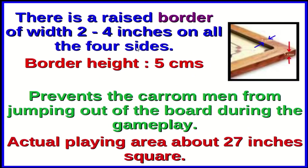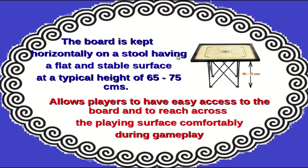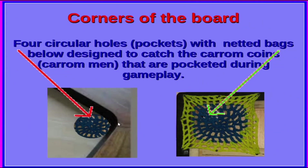On all four sides of the board there are raised borders of width 2 to 4 inches and a typical height of about 5 cm. The purpose of this border is to prevent the carom men from jumping out of the board during play. The actual playing area is therefore about 27 inches square, leaving aside the border. The board is kept horizontally on a stool at a typical height of about 65 to 75 cm, allowing players to have easy access to the playing surface comfortably.